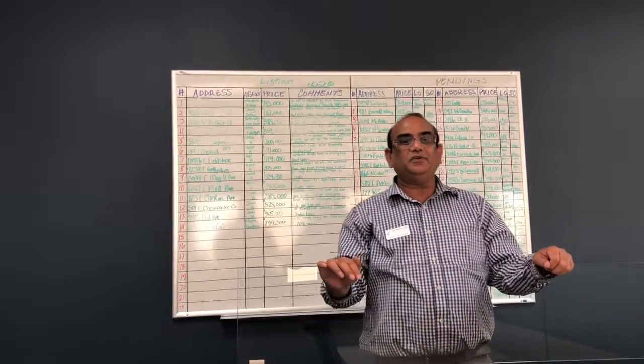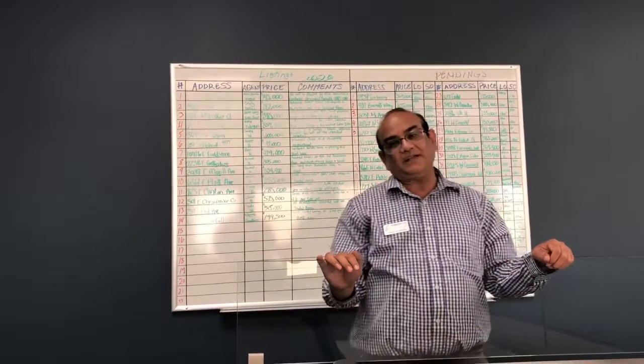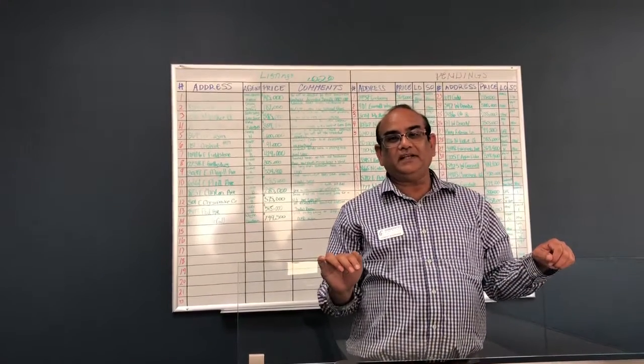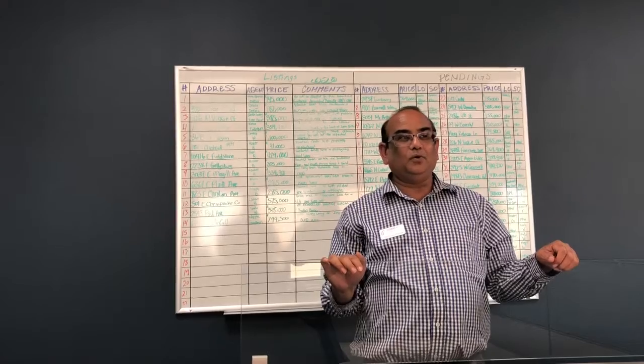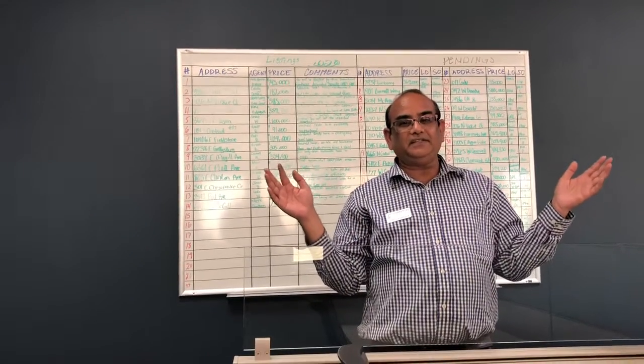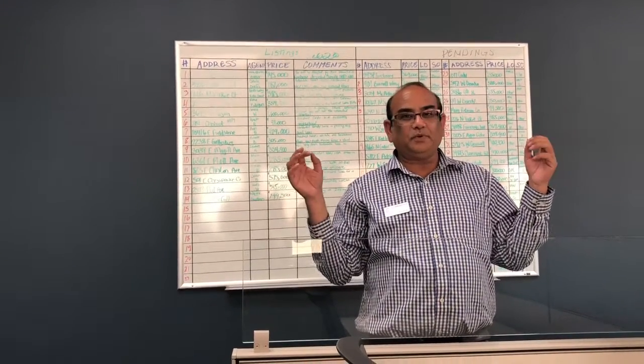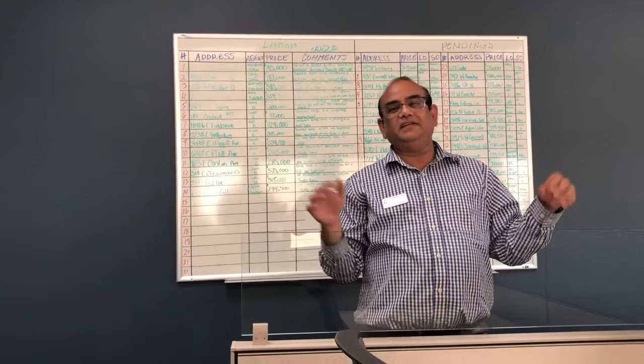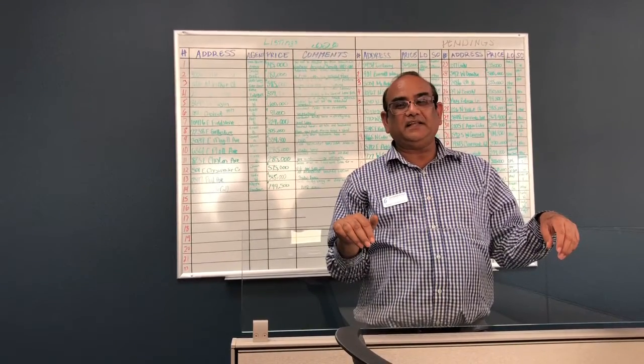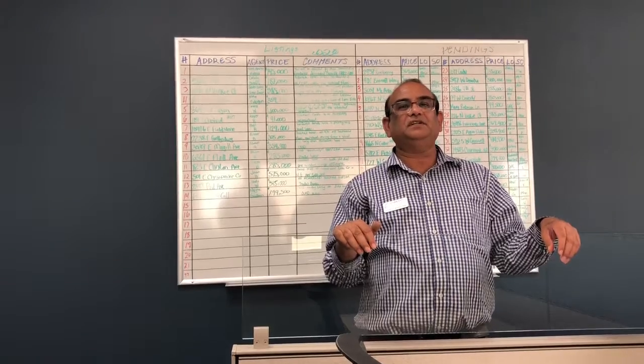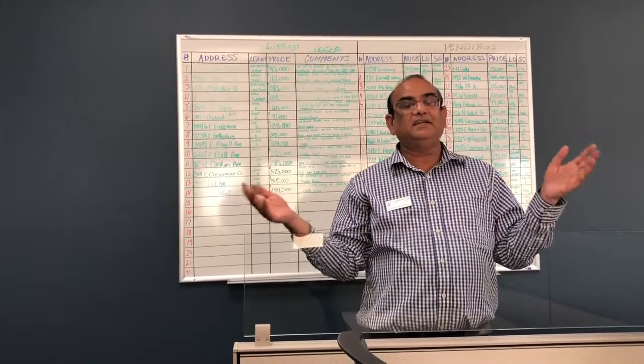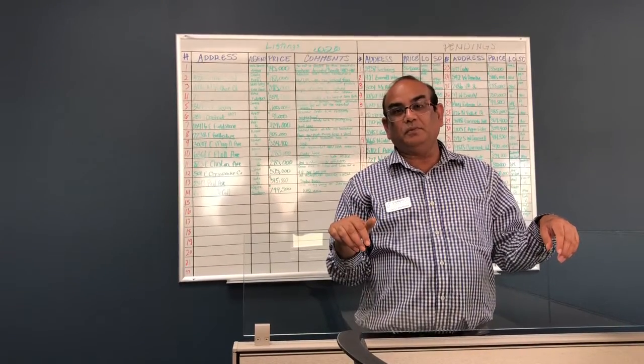What is going on in the market? As you know, the inventory is super, super low. That is why we are seeing so many properties with 40 offers, 50 offers, and it's getting difficult for buyers to buy property because they have to compete with 30-40 offers.